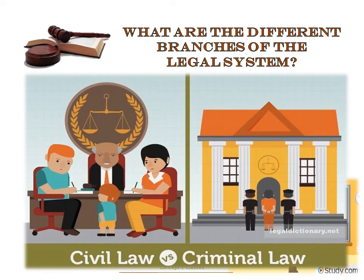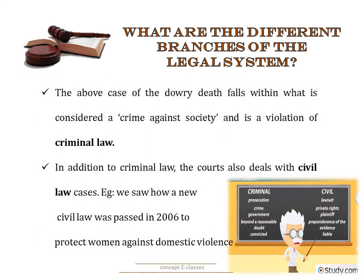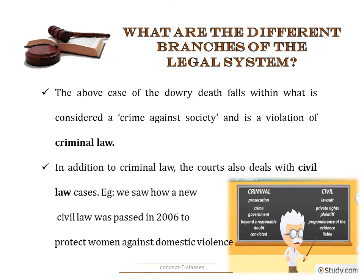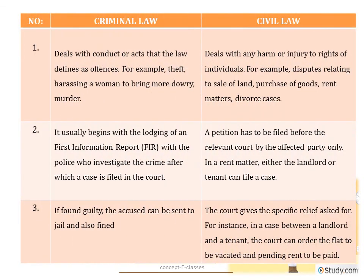Let us discuss about the two different branches of the legal system: civil law and criminal law. The case of dowry death which we just saw falls within what is considered a crime against the society and is a violation of criminal law. The courts also deal with civil cases — for example, the law passed in 2006 to protect women against domestic violence comes under civil law. Criminal law deals with conduct or acts that the law defines as offenses — for example, theft, harassing a woman to bring more dowry, and murder. Civil law deals with any harm or injury to the rights of the individual — for example, disputes relating to the sale of land, purchase of goods, rent matters, and divorce cases.